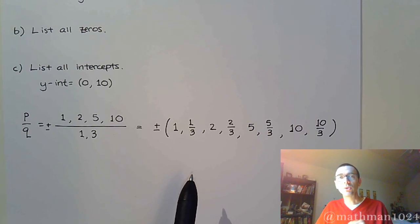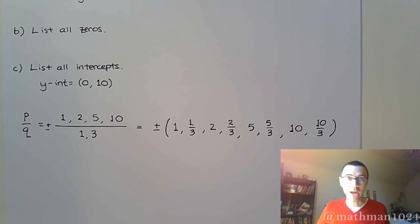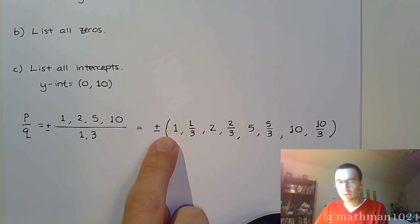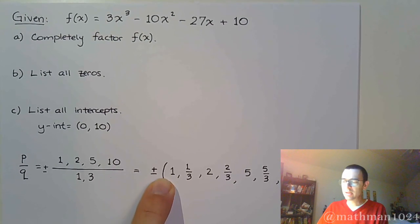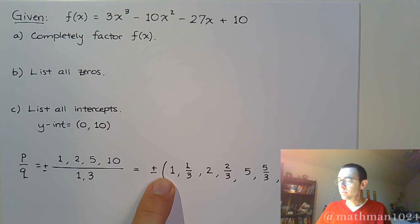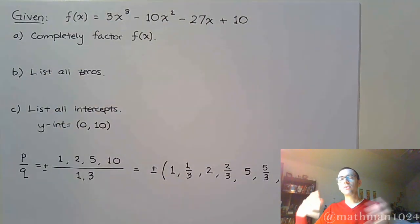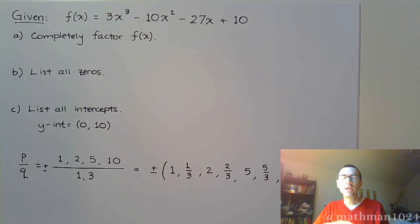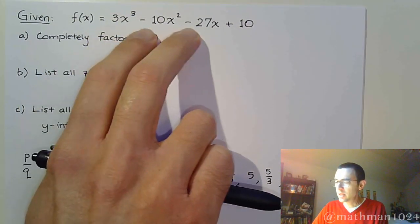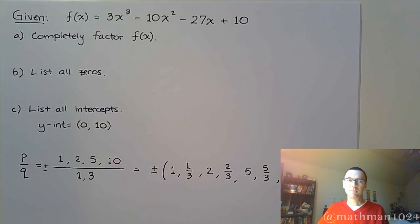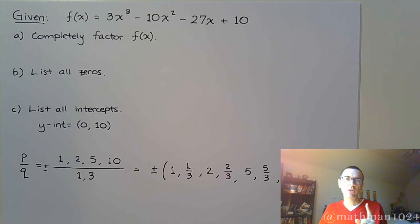The Rational Zeros Theorem doesn't tell us anything about complex or irrational solutions. Since this is a degree-3 polynomial, we should have three solutions. If we can find one that works via synthetic division, we're left with a quadratic we can handle. Testing x = 1 gives 3 - 10 - 27 + 10, which is not zero, so we'll use synthetic division to find one that works.